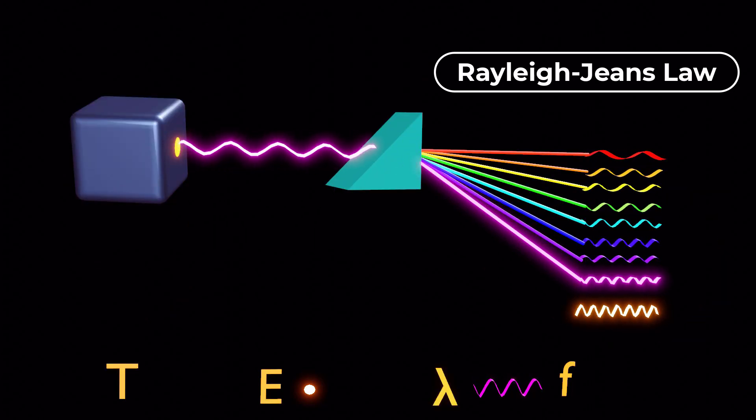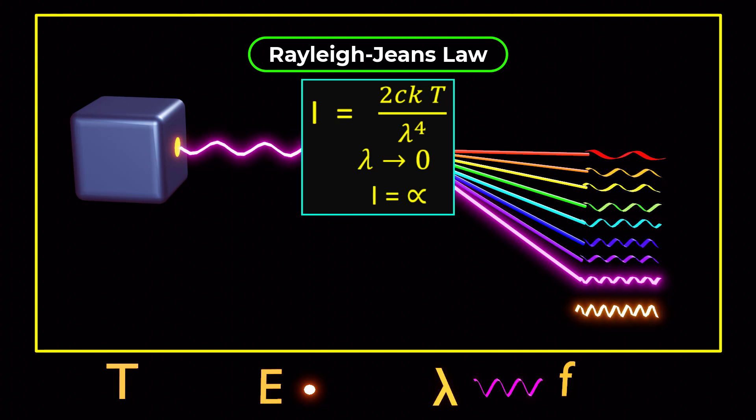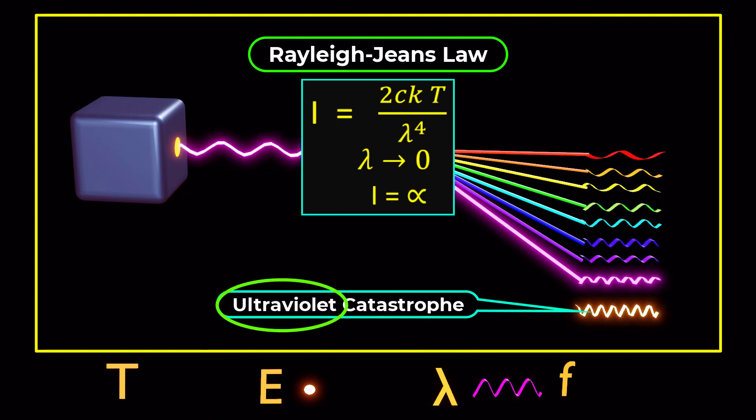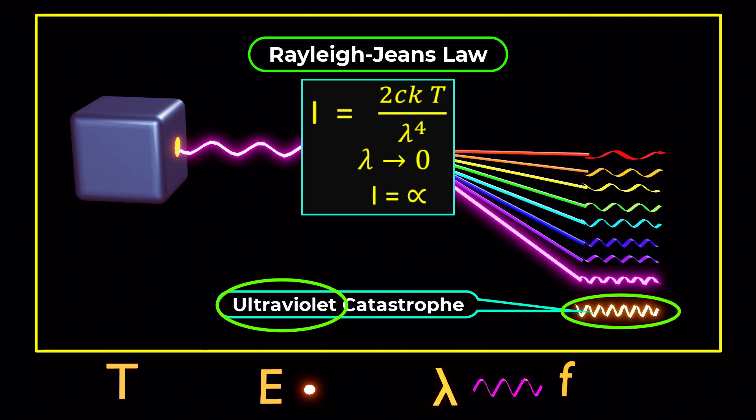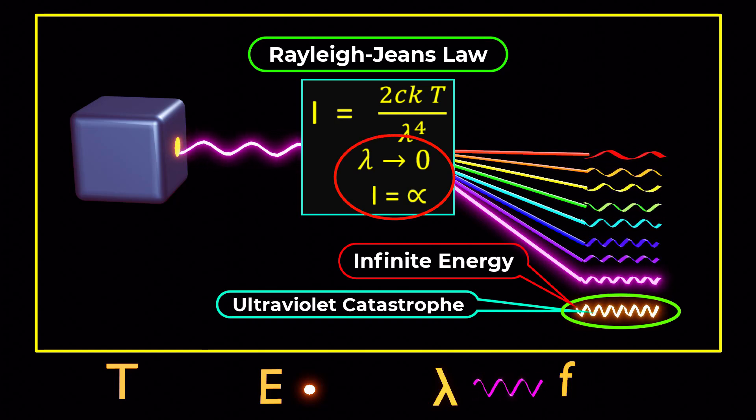However, the predictions of classical physics, particularly the Rayleigh-Jeans law, clashed with experimental observations. It led to a significant problem known as the ultraviolet catastrophe. This term refers to the issue arising in the ultraviolet region of the electromagnetic spectrum where the law predicted infinite energy output at shorter wavelengths.